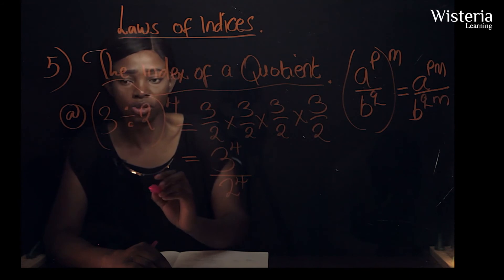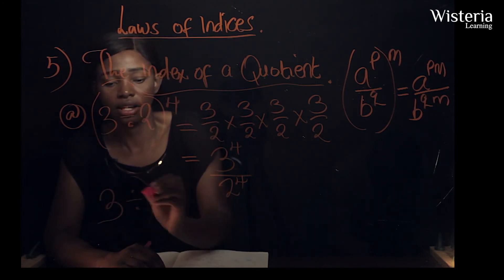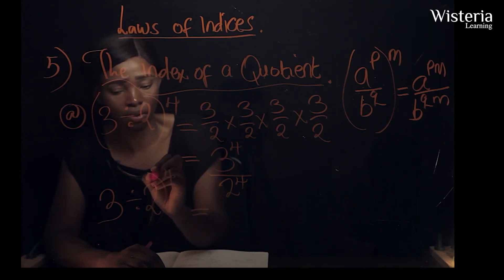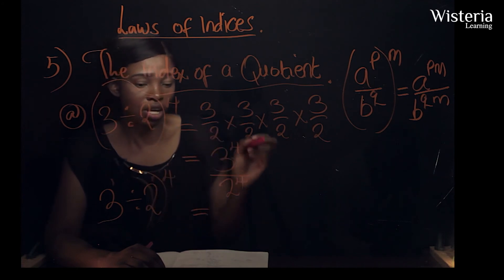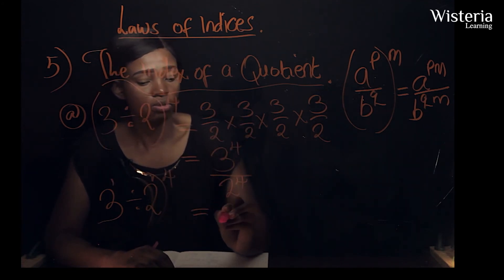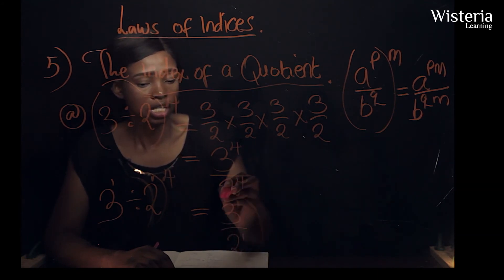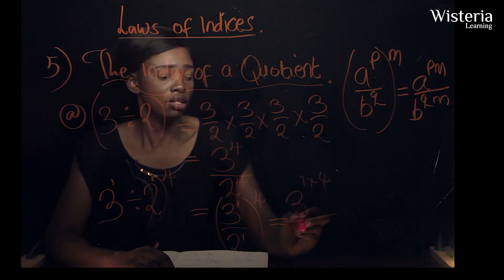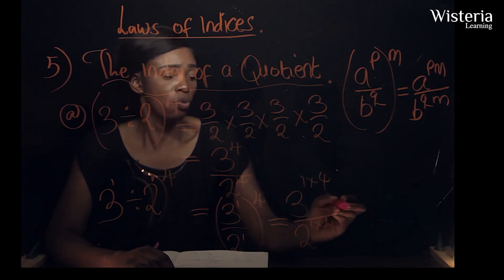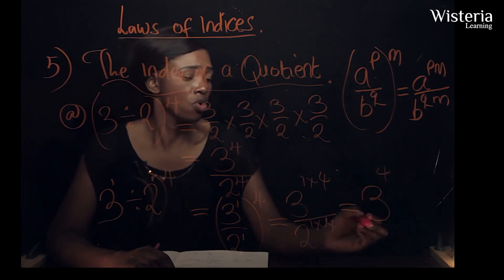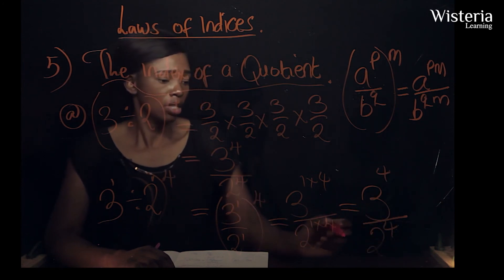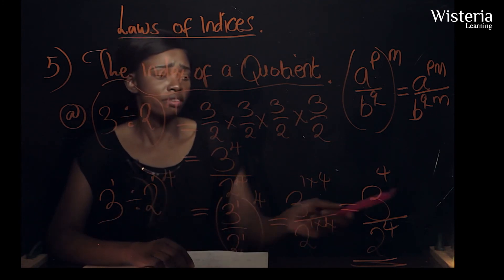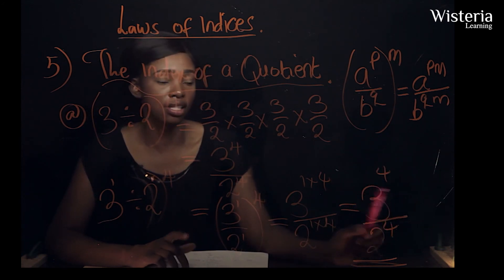So for three over two to the power four — there is an invisible power one on each base — it will be three to the power one times four over two to the power one times four, which gives us three to the power four over two to the power four. This is the easiest way to work out indices in this form. If the question required evaluation, we would find three to the power four and two to the power four, then divide.